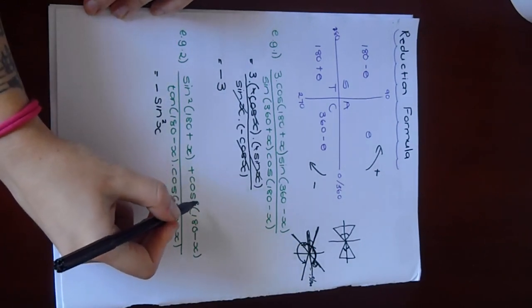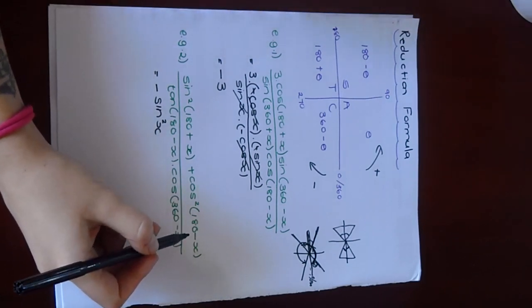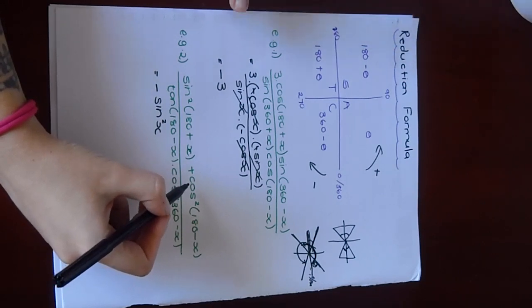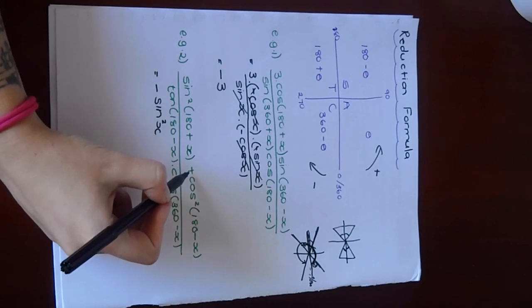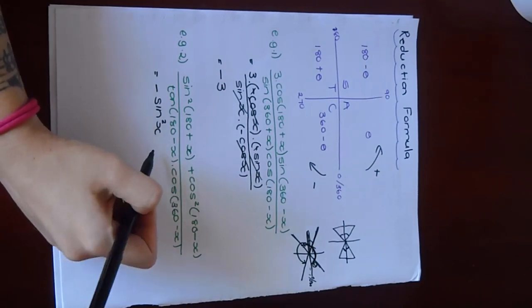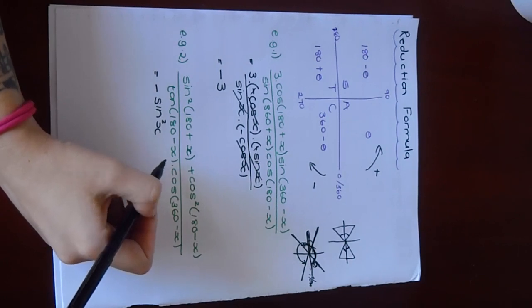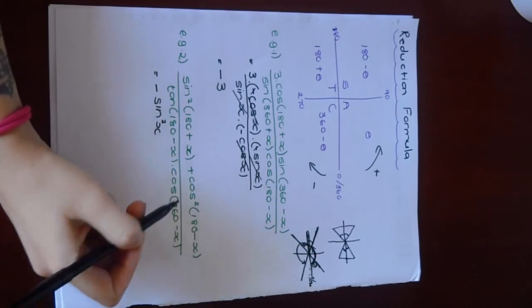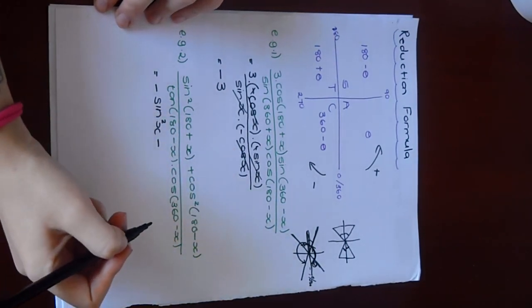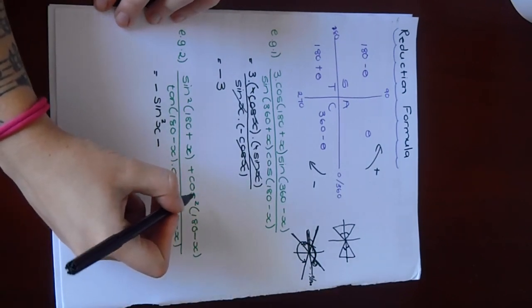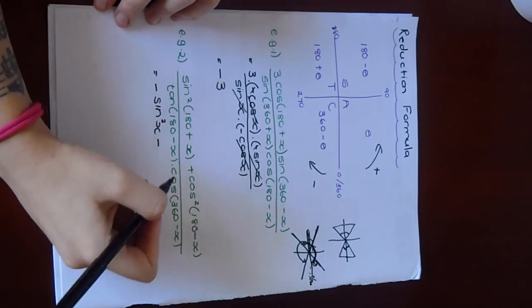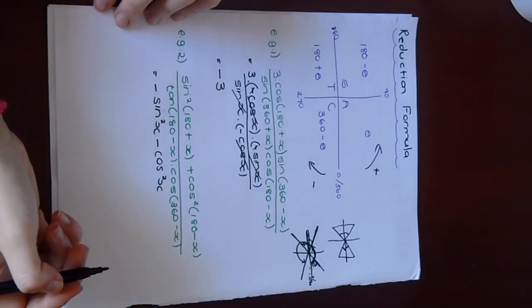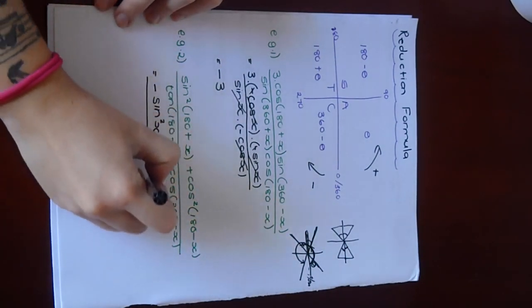Then this one over here, cos squared of 180 minus X. 180 minus X is in the second quadrant. Here, cos is negative. Just be careful, if this already was a negative, now you're making cos negative, it would become a positive, because two negatives make a positive. But over here, this is a positive. So if cos becomes a negative, a positive and a negative will make a negative. So cos squared of 180 minus X becomes negative cos squared X.